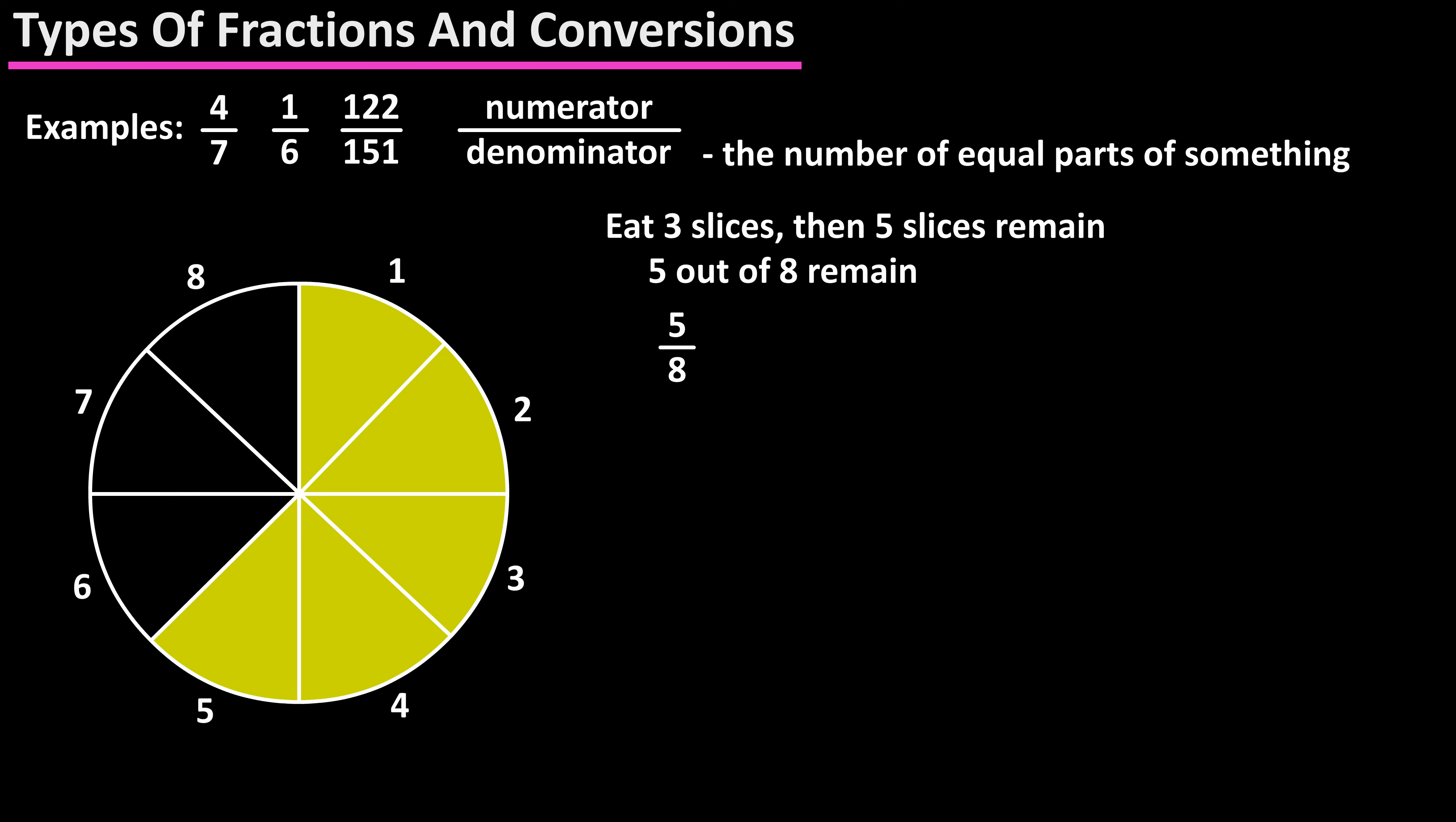Fractions can also be written as decimals. In our example of five over eight, we divide the numerator by the denominator, so five divided by eight equals 0.625. A proper fraction can also be looked at as a percentage.